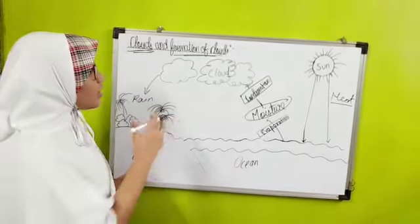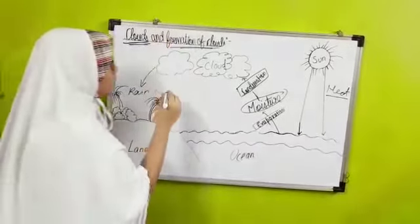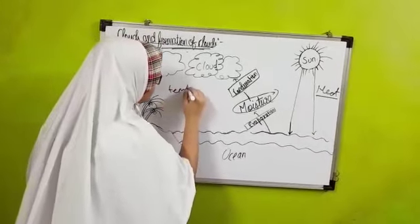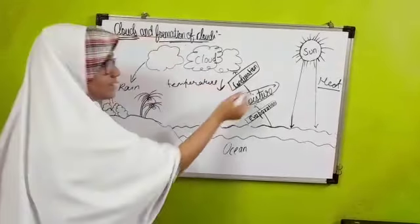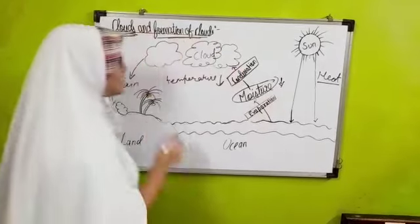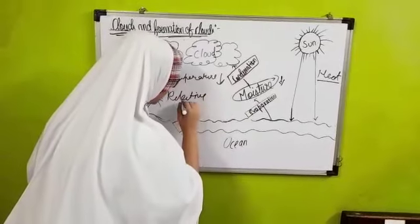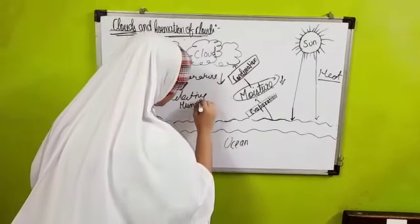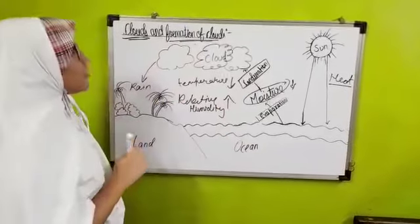As the air goes up, the temperature of the air reduces and the moisture holding capacity of the air reduces. Relative humidity keeps on increasing. The water vapor in the atmosphere turns into water or ice.